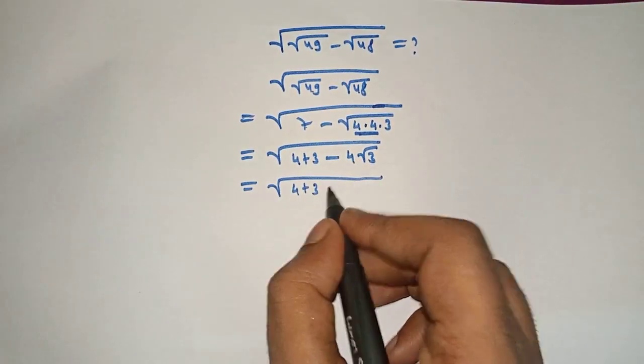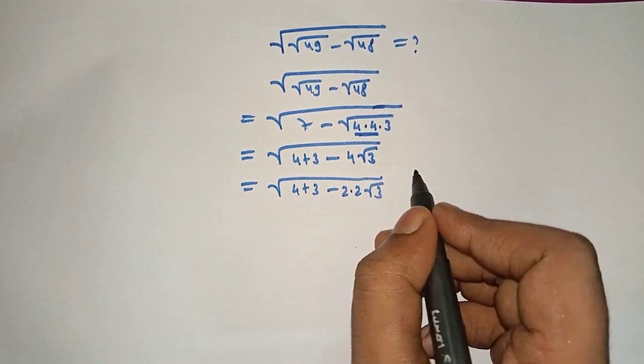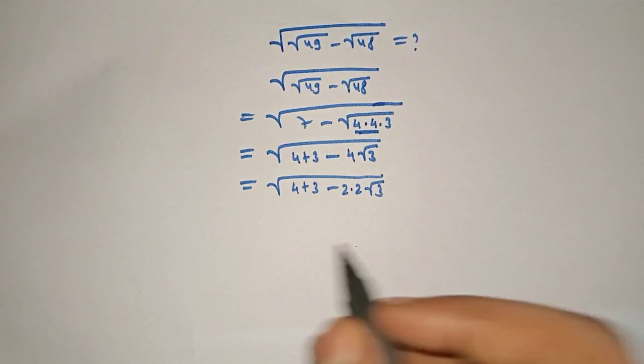4 can be written as 2 into 2 square root of 3. Here it is in the form of...